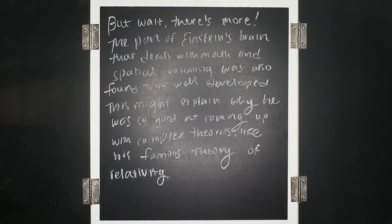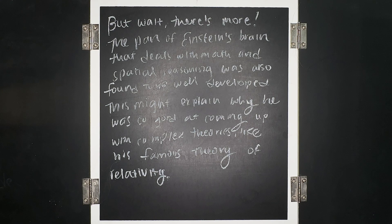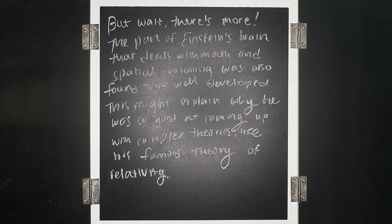But wait, there's more! The part of Einstein's brain that deals with math and spatial reasoning was also found to be well developed. This might explain why he was so good at coming up with complex theories, like his famous theory of relativity.